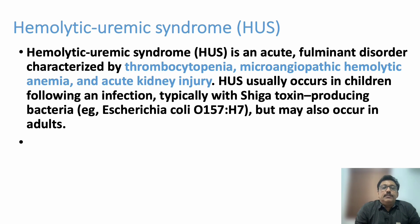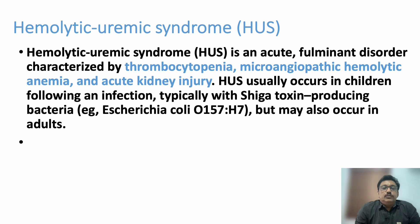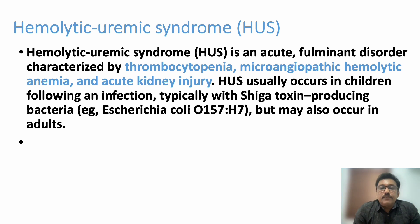HUS is an acute fulminant disorder characterized by thrombocytopenia, microangiopathic hemolytic anemia, and acute kidney failure. Acute kidney failure incidence is less in TTP but more prominent in HUS. HUS occurs predominantly in children, whereas TTP is more common in adults. HUS typically follows an infection, classically caused by Shiga toxin-producing bacteria such as E. coli O157:H7.